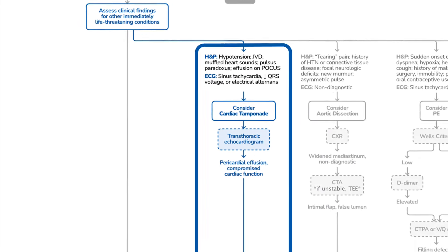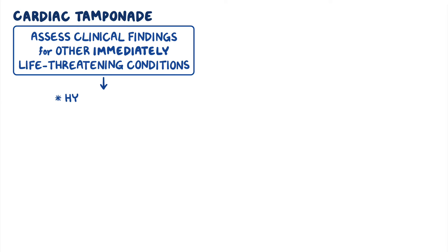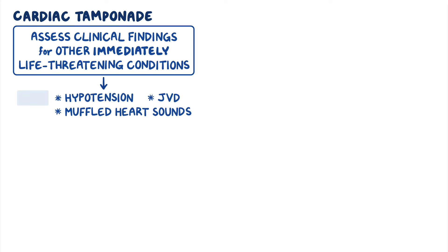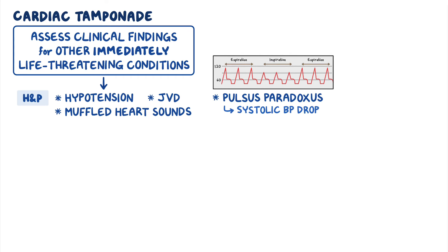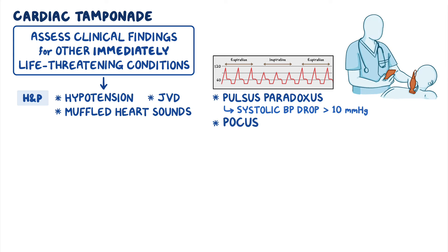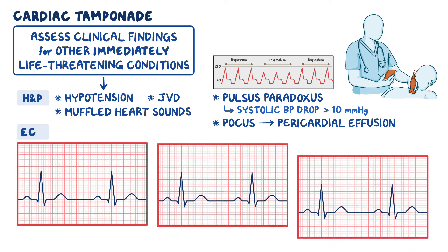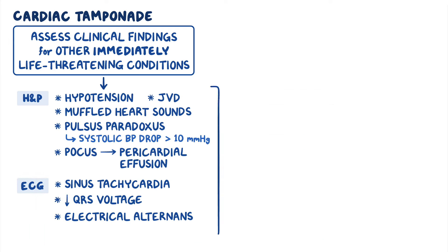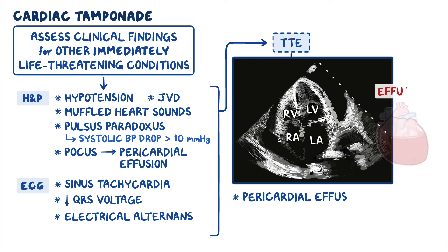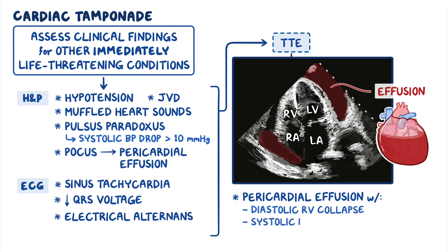Let's look at cardiac tamponade. You should suspect this condition if your patient has hypotension, jugular venous distension, and muffled heart sounds on physical examination. You can also check for pulsus paradoxus, where there's an abnormally large drop in systolic blood pressure during inspiration that's greater than 10 mmHg. During the physical exam, you can also do a point-of-care ultrasound, or POCUS, to check for pericardial effusion. The ECG may show sinus tachycardia, low QRS voltage, or electrical alternans, which refers to alternating QRS amplitudes. If you suspect cardiac tamponade, your next step is to promptly obtain a transthoracic echocardiogram, or TTE. The presence of a pericardial effusion with findings like diastolic right ventricular collapse, systolic right atrial collapse, and dilated IVC with decreased respiratory variation confirm your diagnosis.